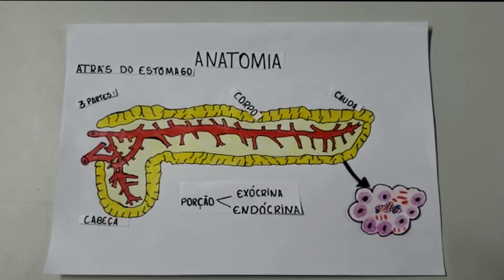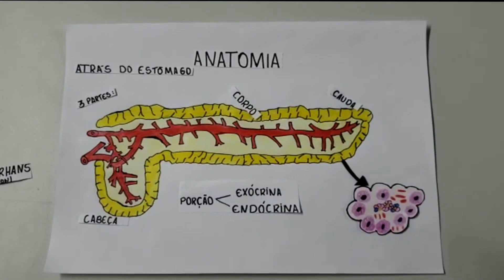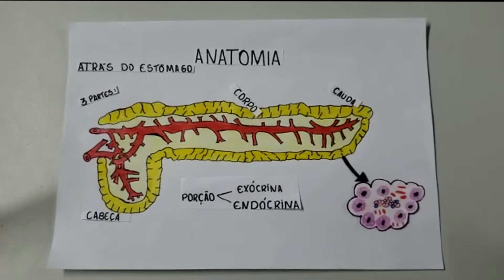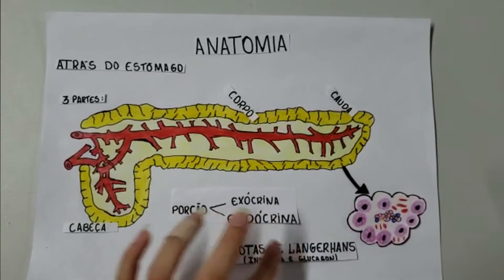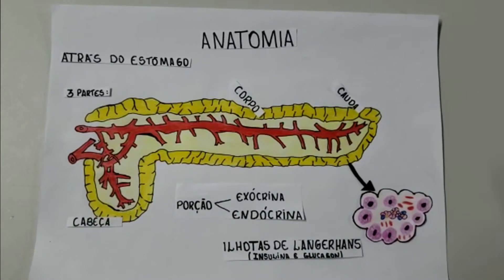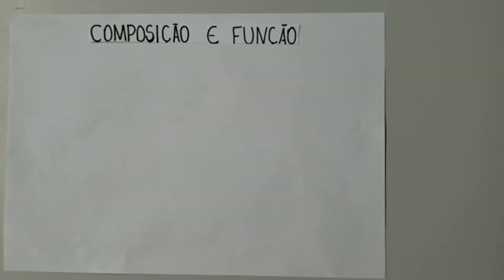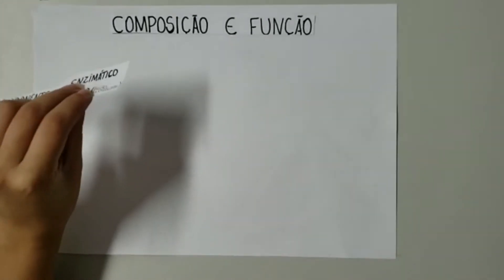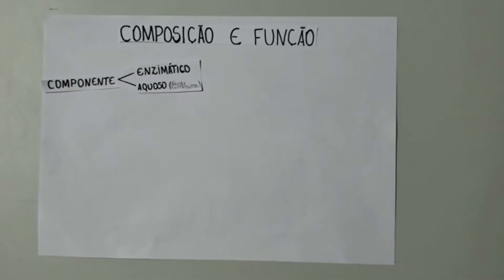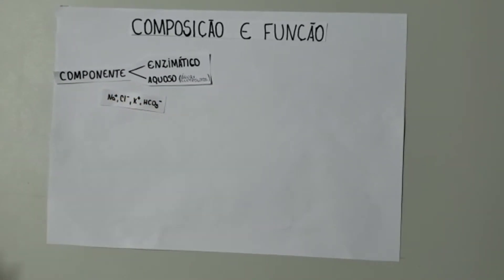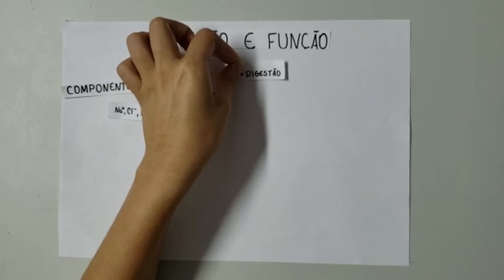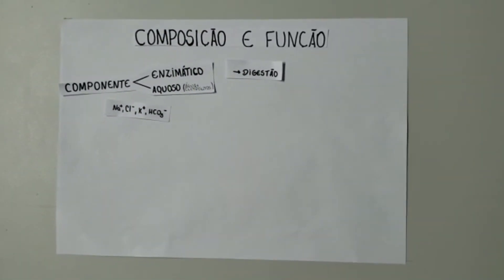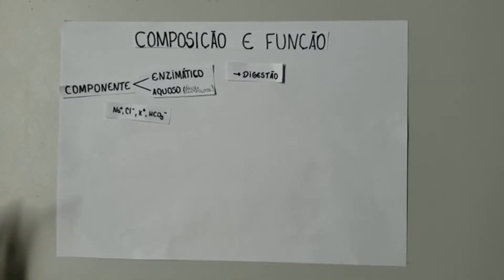A parte exócrina está organizada por agrupamentos de células secretoras chamadas ácinas, que circundam os ductos. Entre as ácinas estão as ilhotas pancreáticas, ou ilhotas de Langerhans, que são miniglândulas endócrinas que liberam principalmente insulina e glucagon, hormônios com papel importante no metabolismo de carboidrato. A secreção exócrina consiste em um componente enzimático e aquoso, contendo água e eletrólitos como sódio, cloreto, potássio e bicarbonato. As células acinares produzem um componente rico em enzimas fundamental na digestão de carboidratos, proteínas e lipídios, possibilitando a absorção dessas moléculas pelo epitélio intestinal.